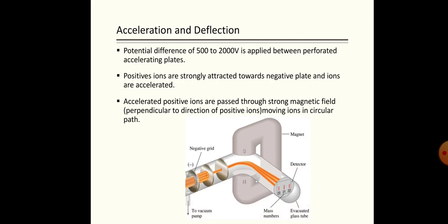After partial separation by the electric field, we apply a magnetic field. The magnetic field causes the ions to move in a circular path. In this circular path, lighter particles which are strongly attracted by the magnetic field have a smaller radius, as compared to heavier particles which are less attracted by the magnetic field and have a larger radius.